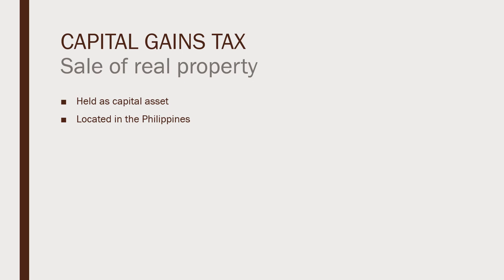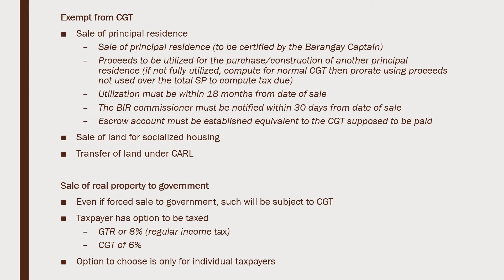The second type of transaction subject to capital gains tax is the sale of real property. It should be held as a capital asset — meaning it is not used in business — and it should be located in the Philippines. Transactions exempt from CGT include: first, the sale of principal residence; second, sale of land for socialized housing; and third, transfer of land under CARL. These three transactions would otherwise fall under the sale of real property held as capital asset, but they are exempt by law.